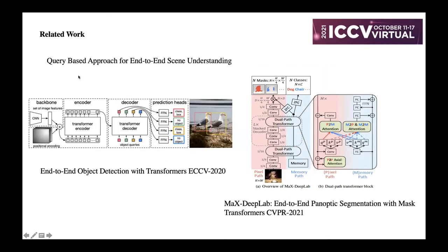There are also several works that use a query-based approach for end-to-end scene understanding. The first is DETR — end-to-end object detection with Transformers from ECCV — which uses object queries to represent things and stuff for panoptic segmentation, but also uses bounding boxes at the first stage. MaskFormer removes the bounding box regression and the RPN, directly using object queries to get the final mask.